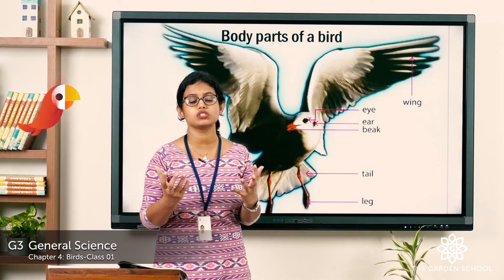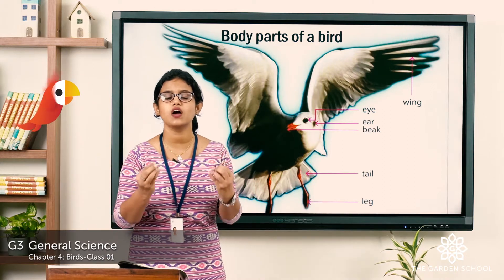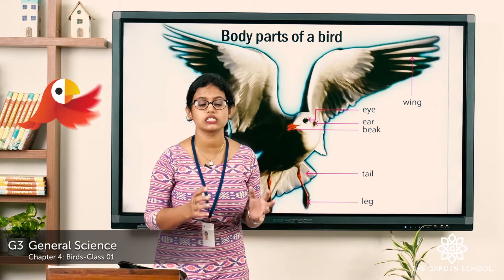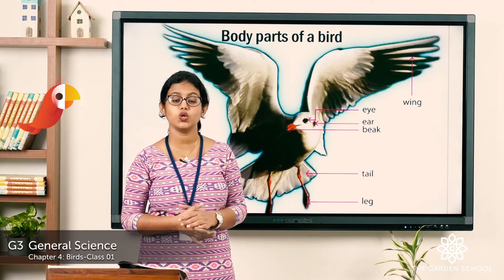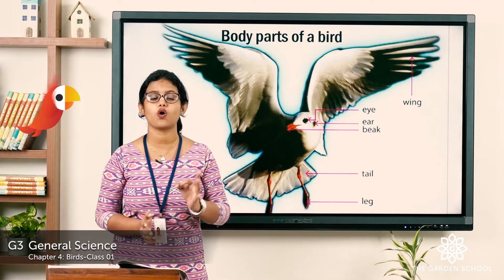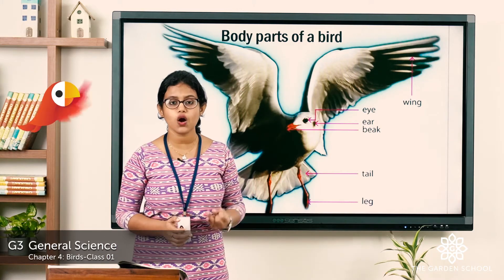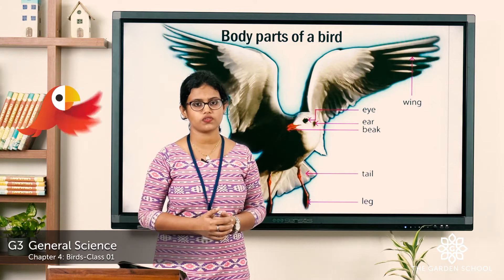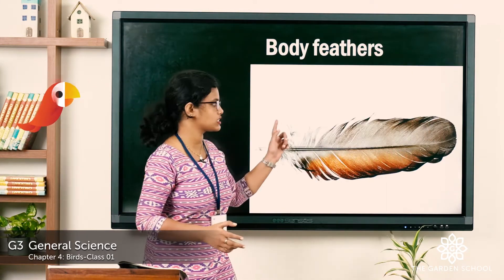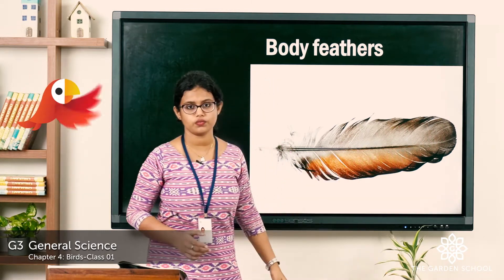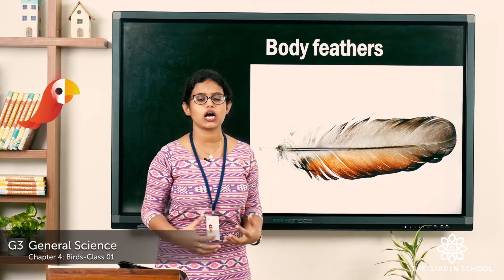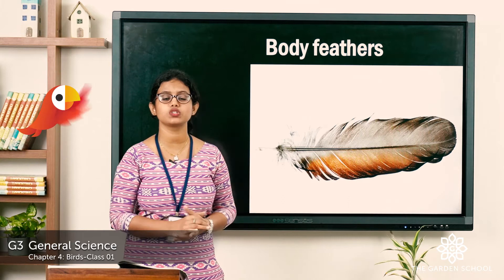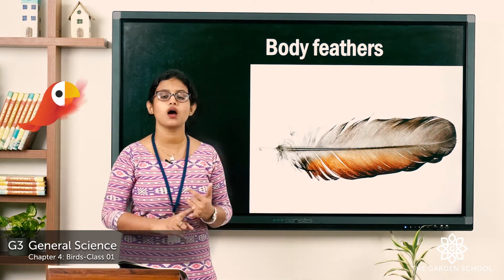What is most special about these birds? They have beautiful feathers — there are birds with colorful feathers. The body of a bird is covered with different types of feathers. There are three different types of feathers: the body feather, the down feather, and the flight feather. The body feather is small and stiff; it covers the body of a bird and gives shape to the body of a bird.